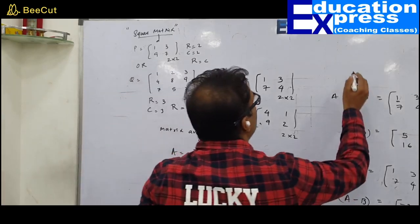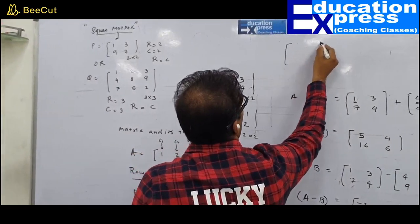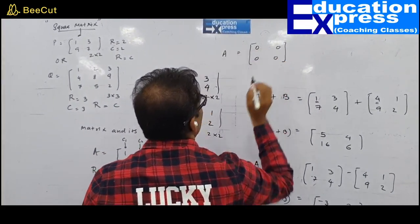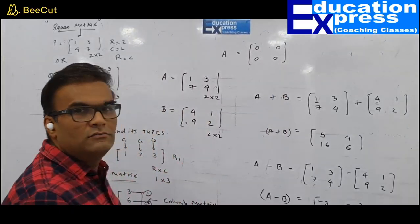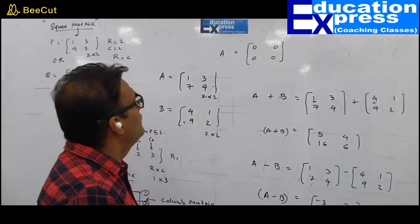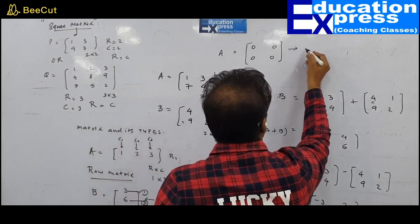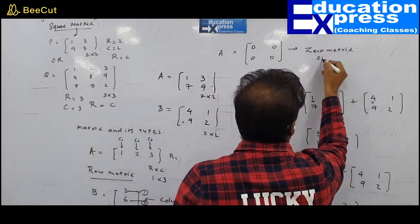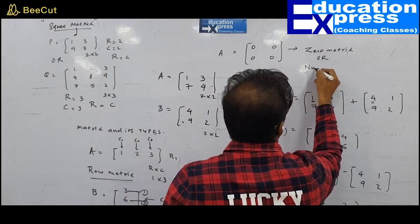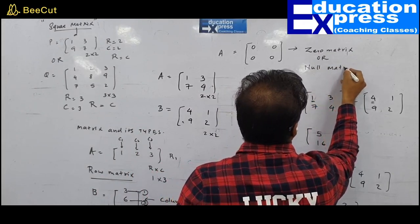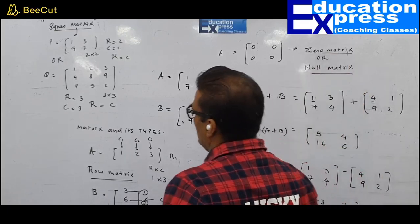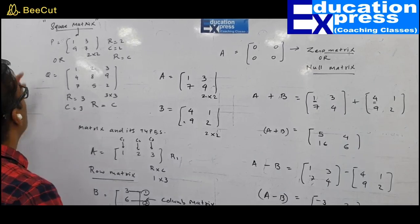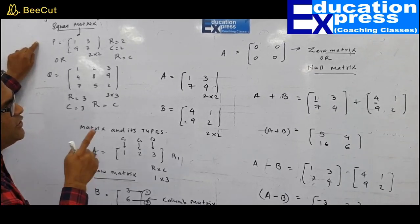We also have a matrix where all the elements are zero. This is referred to as a zero matrix or null matrix. So we have: row matrix, column matrix, square matrix, and zero matrix.